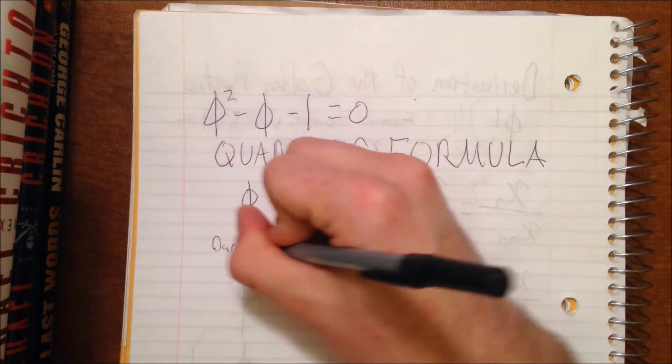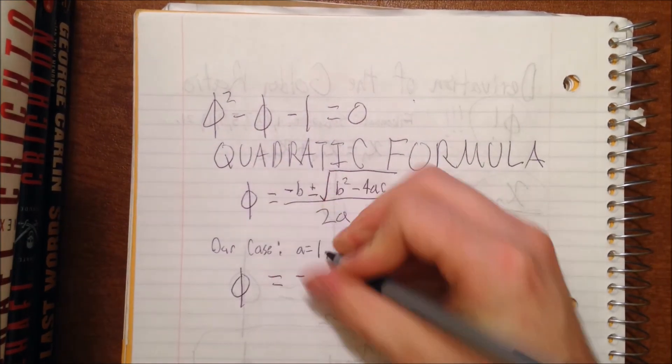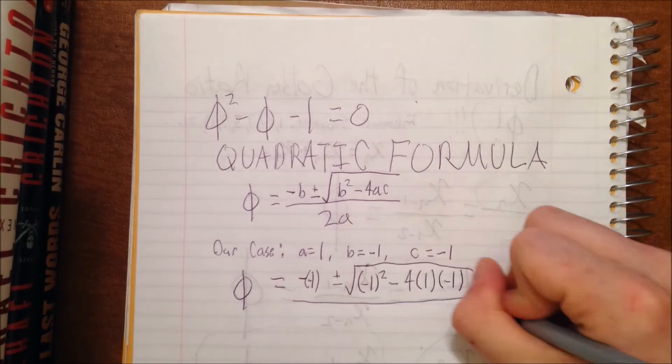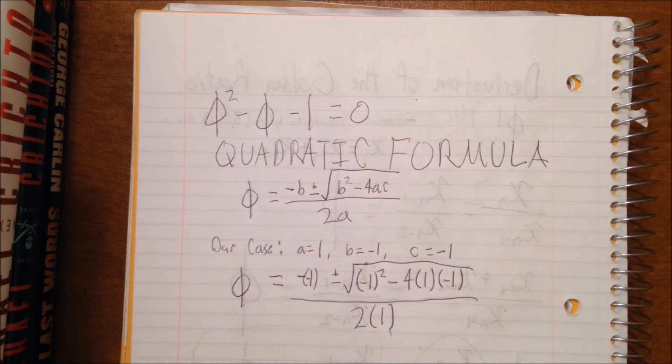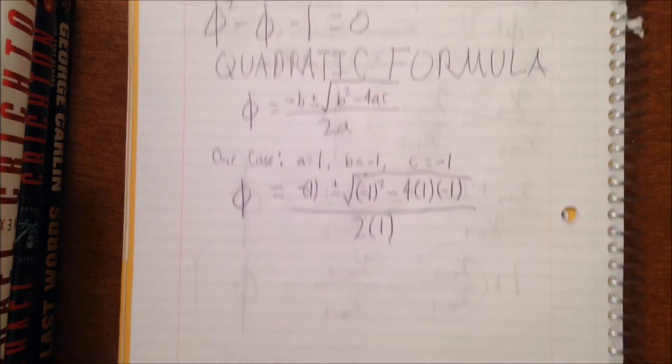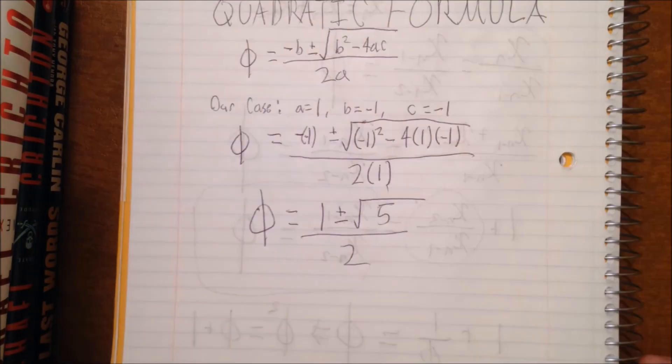Now in our case, a is equal to 1, b is equal to negative 1, and c is equal to negative 1. So if we plug those numbers into the quadratic formula, we end up with the solution that phi is equal to 1 plus or minus the square root of 5 divided by 2.